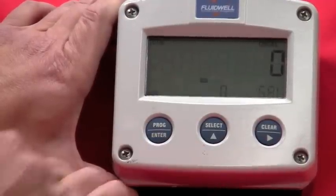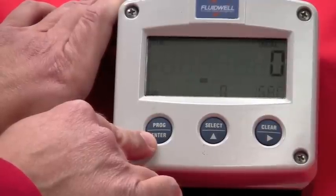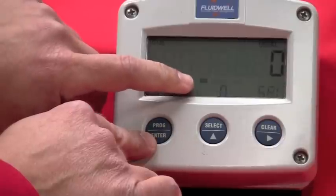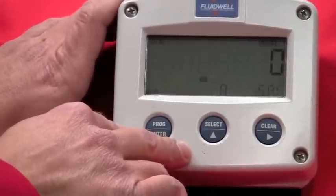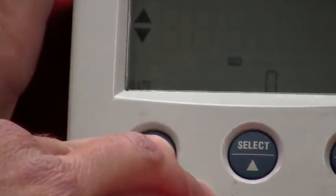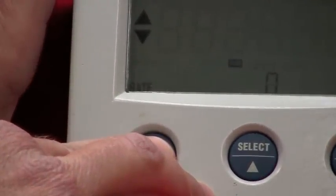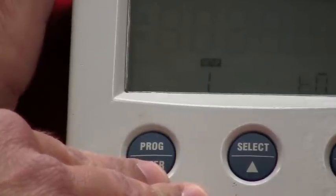Now, to get into programming the unit, we're going to use the program key, and I need to hold this button down for seven seconds to enter the programming mode. What you'll notice is the run mode will change to programming, and that will enable us to get into the menu structure of the meter. So I'm going to push this in and wait for seven seconds. And now we're into the programming mode of the meter.